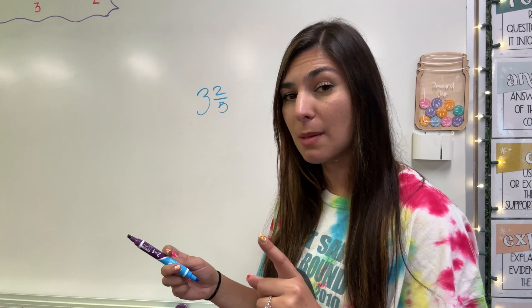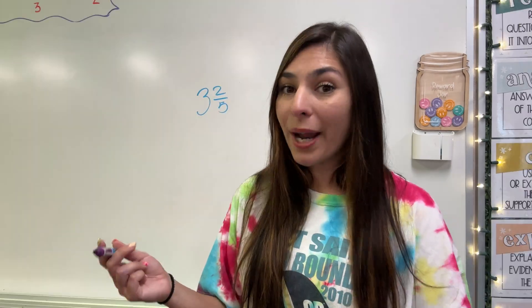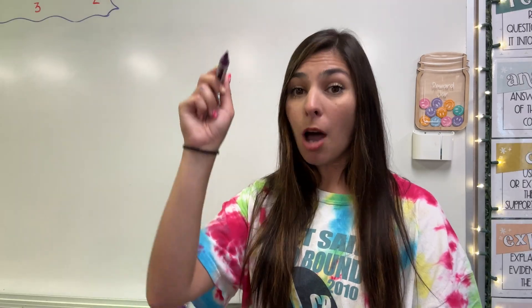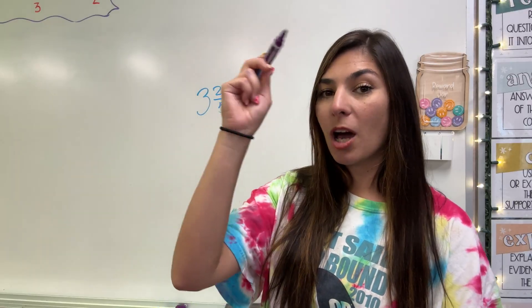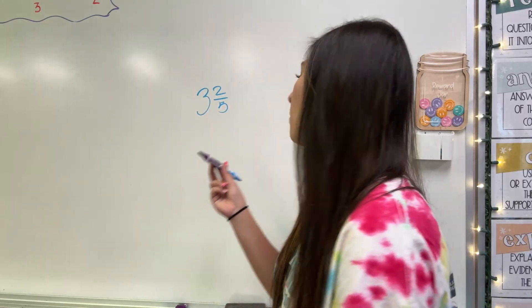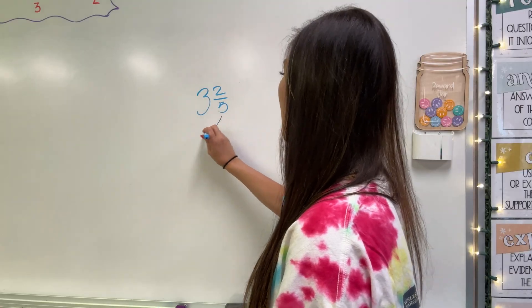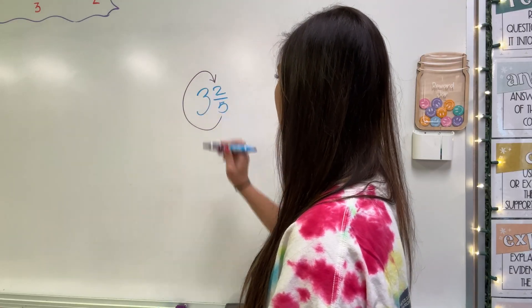To do that, I'm going to use the reverse C method. What does that mean? So when we write the letter C, we normally start at the top and go to the bottom. This method is called the reverse C because we are starting at the bottom and going around to the top. It's just a fun little way to remember.